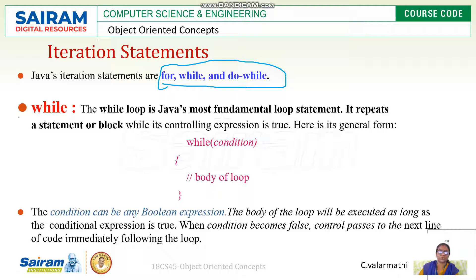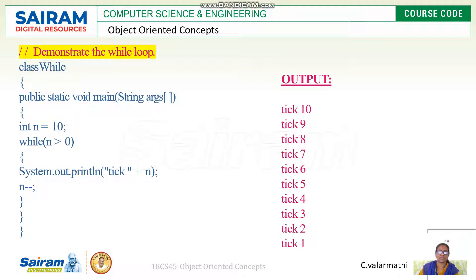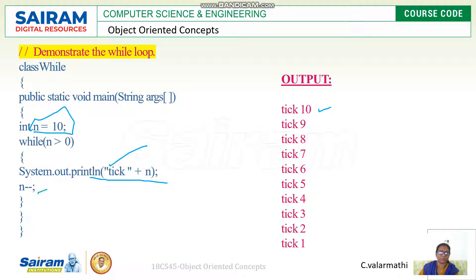Iteration statements include the for loop, while loop, and do-while loop. The while loop is the most fundamental loop statement. Its syntax has a condition and a body enclosed in curly braces. Example: n is assigned 10, and while n is greater than zero the loop body executes, decrementing n from 10 down to 1. When the condition becomes false, execution exits the while loop.